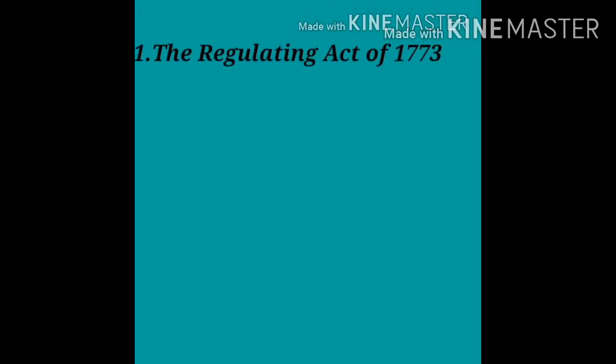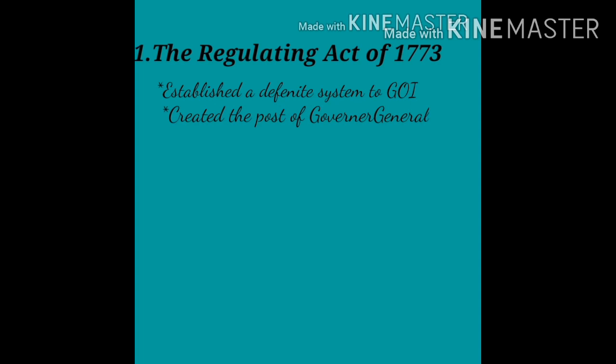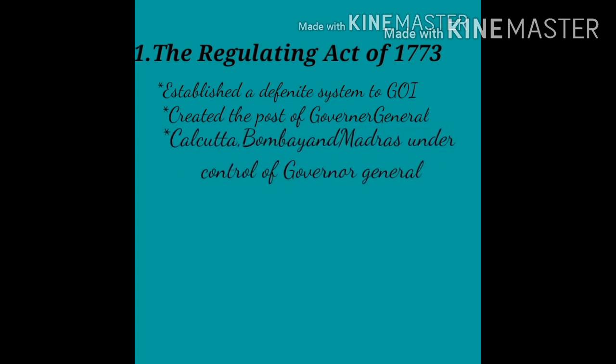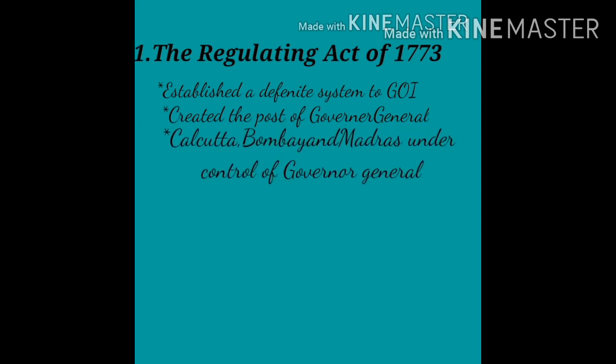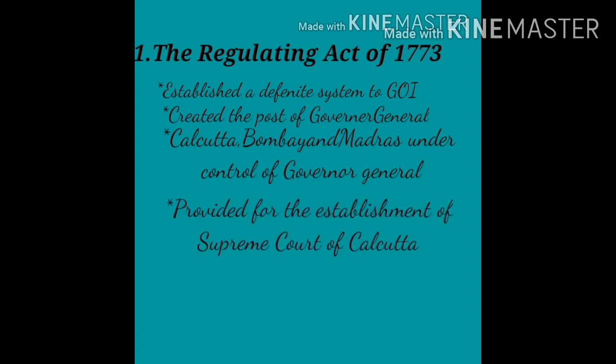The first important step of the British Parliament was the Regulating Act, which established a definite system of government for India. The act created the government of India, recognized the government of Kolkata, and brought Bombay and Madras under the control of the Governor General of Bengal. It also provided for the establishment of a Supreme Court at Kolkata, comprising a Chief Justice and three other judges.